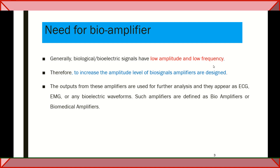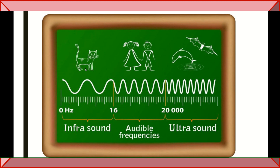Frequency and amplitude are both important parameters in amplifiers. For example, before a natural disaster, animals can find it before humans can predict it, because the frequency heard by animals is very low — 0 to 16 hertz. Human beings can hear from 20 to 20 kilohertz, and mammals can hear above 20 kilohertz. So frequency plays an important role, and amplitude is also a very important parameter. We have to increase the signal strength using different types of amplifiers.